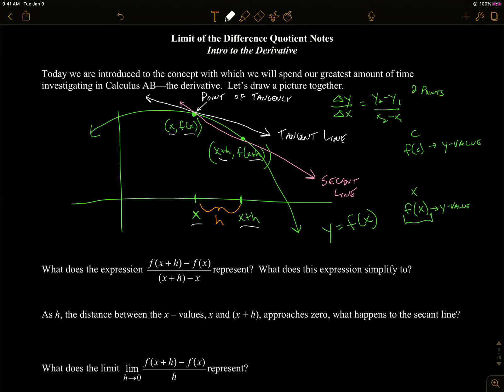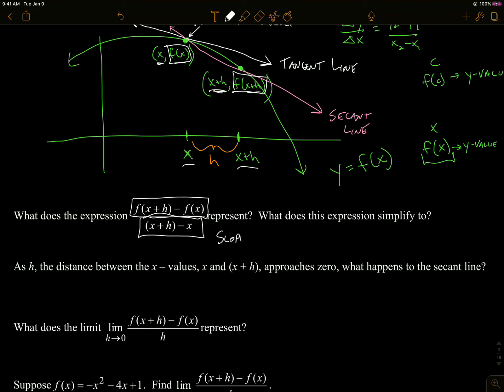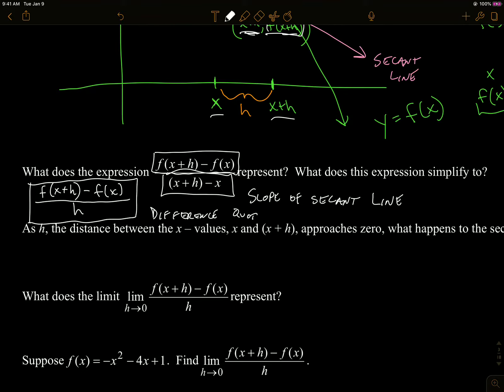So we're going to write the slope of that secant line. If I do the y value minus the y value, I get this numerator. And the x value minus the x value, I get this denominator. That expression represents the slope of the secant line. I can simplify the denominator — those are just x values — to h. So we want to remember that it's called the difference quotient.